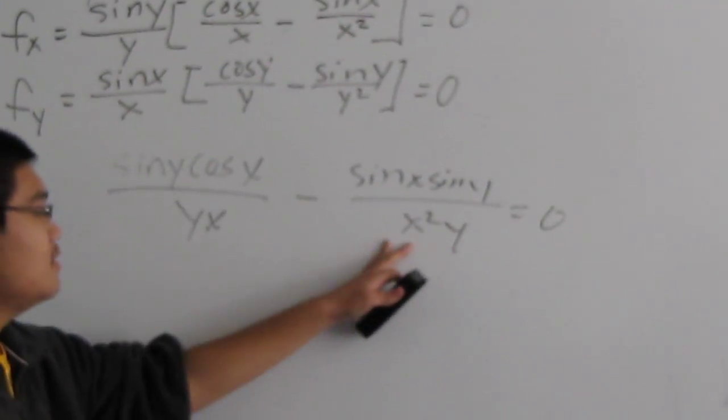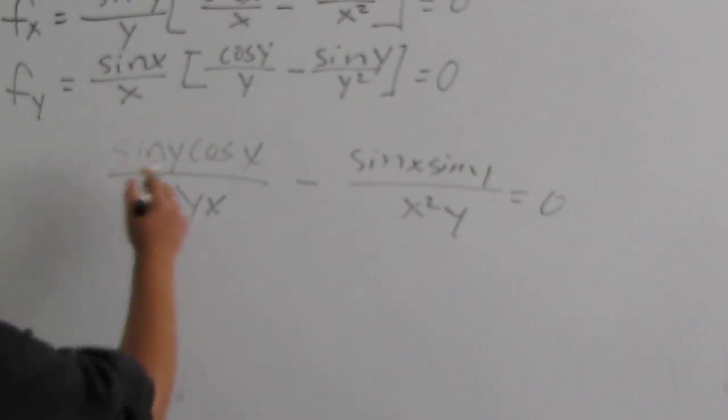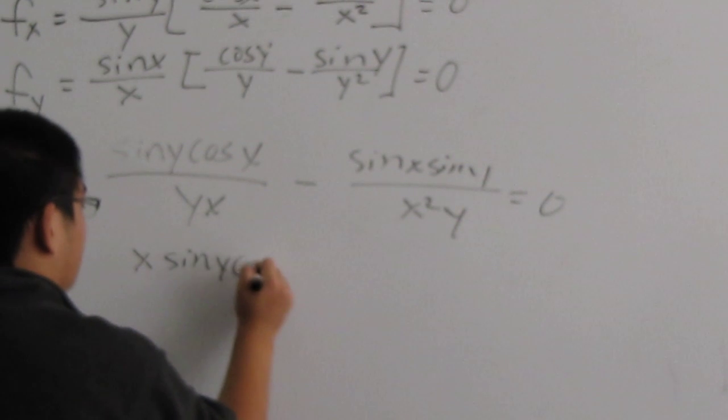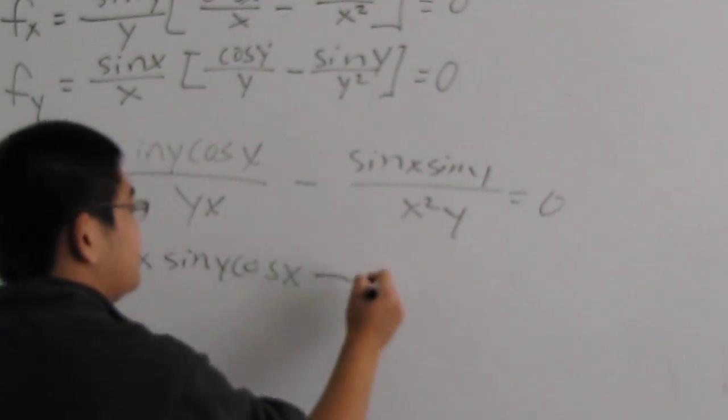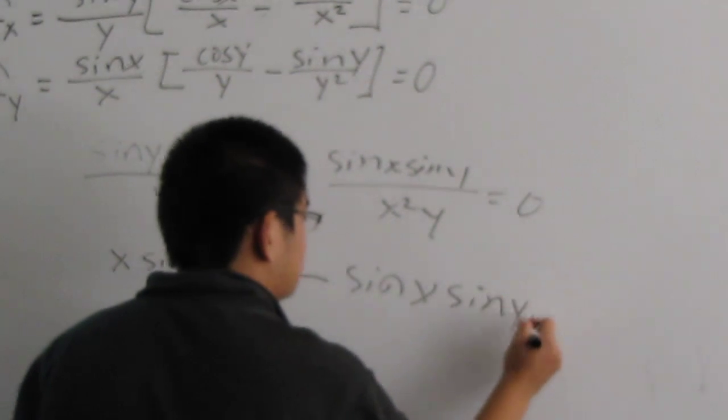Now, we'll multiply both sides by x squared y to cancel out the denominator. So this side, you get x sine of y cosine of x minus sine of x sine of y is equal to 0.